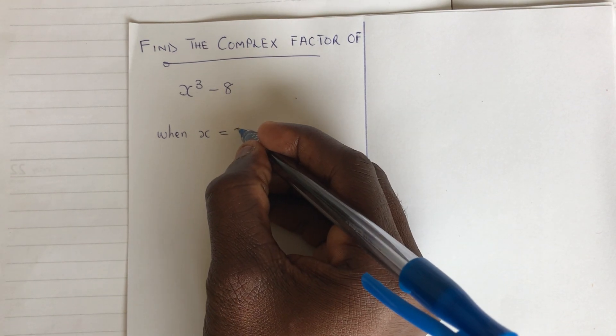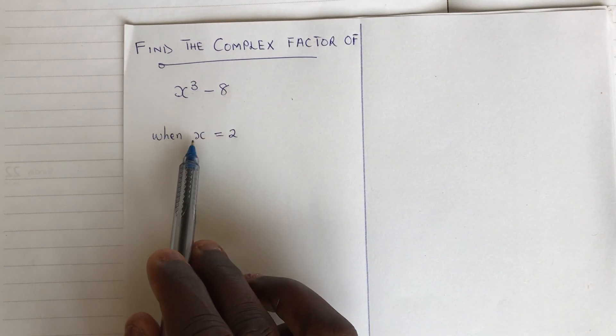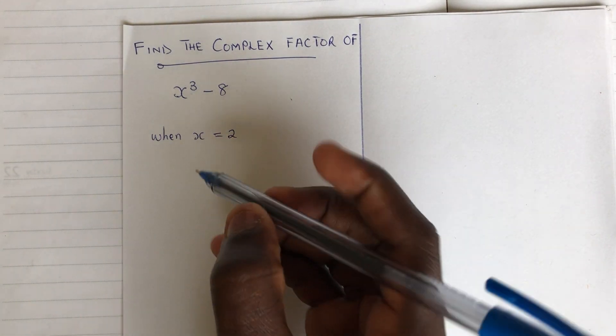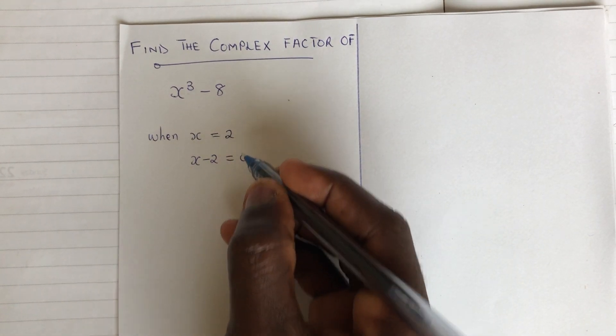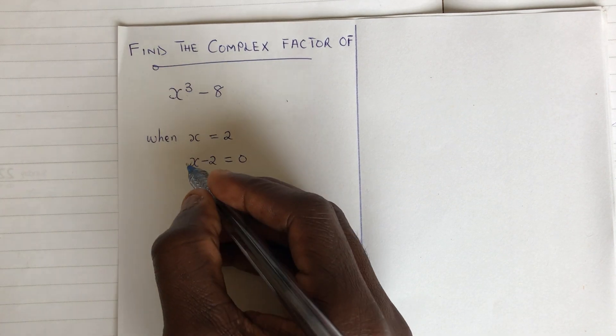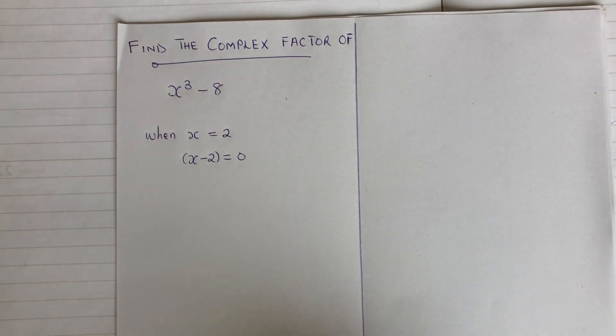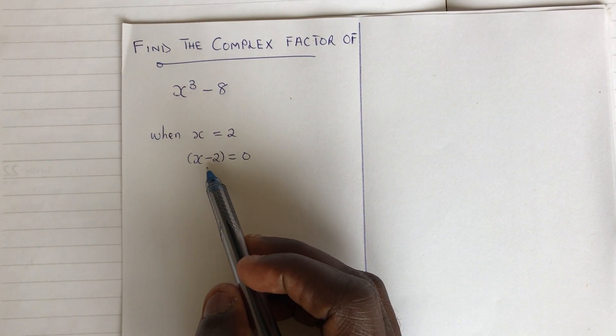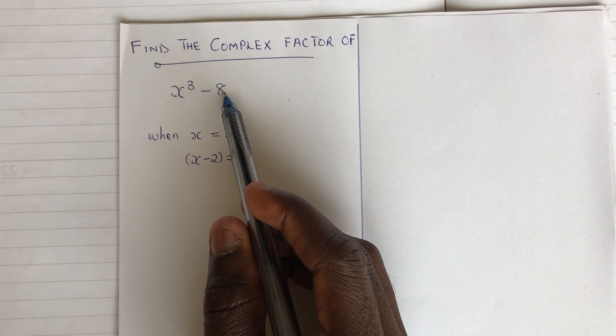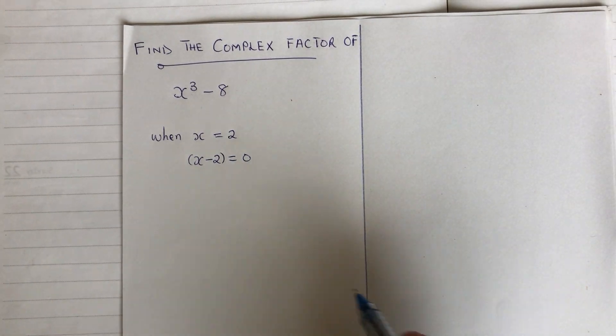And how do we do that? When x is equal to 2, we can find the divisor. When x is equal to 2, then we just carry this one here and equate the function to 0. So we have x minus 2 is equal to 0. So x minus 2 is our divisor. So we will use x minus 2 to do the division. So this becomes our divisor, this becomes our dividend.